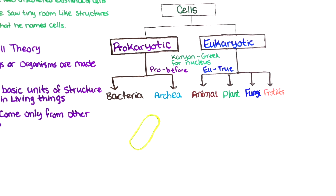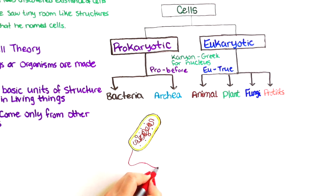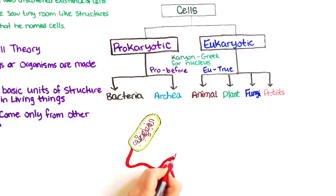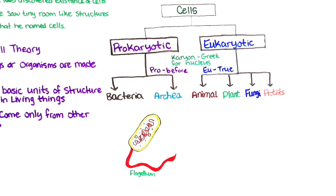The prokaryotic cell is a simple, small cell with no nucleus. The main parts of the prokaryotic cell include the flagella, which is like an appendage and can help the cell to move.